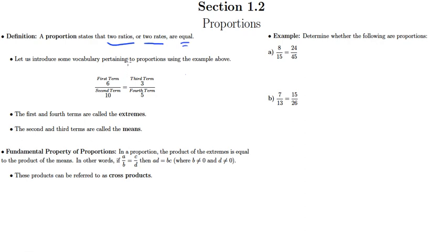So in order to start talking about proportions, we're going to need some vocabulary terms. So first of all, if you have two ratios or rates set equal to each other, that's really two fractions set equal to each other. So it might look like this: six tenths equals three fifths. And of course, that would be a proportion because six tenths is the same fraction as three fifths.